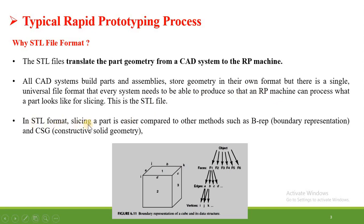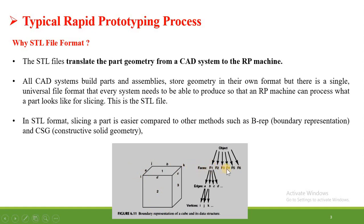In STL format, slicing a part is easier compared to other methods such as boundary representation or constructive solid geometry. The main function of the STL file is to convert the 3D object into very small slices or small parts. You can observe here the boundary representation of a cube and its structure — the cube is converted first into faces such as face number 1, face number 2, face number 3, and so on.